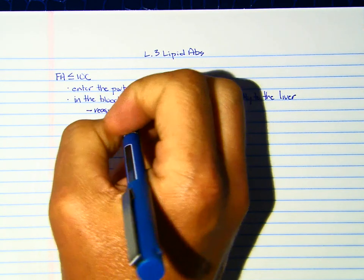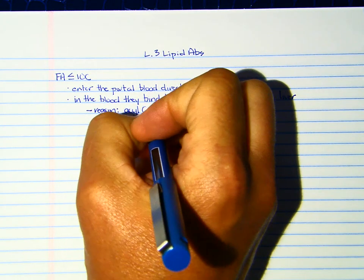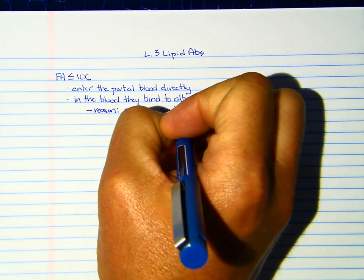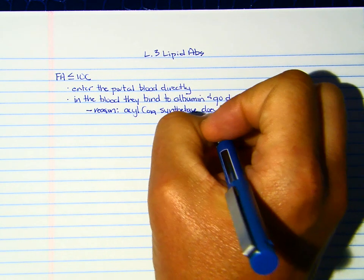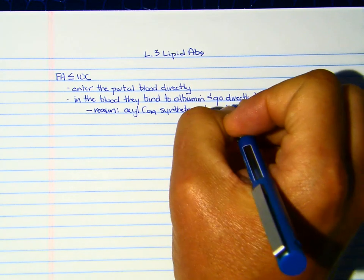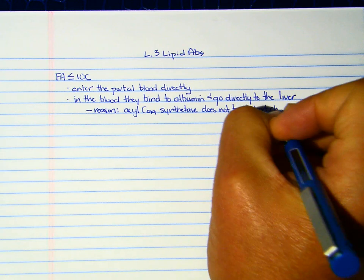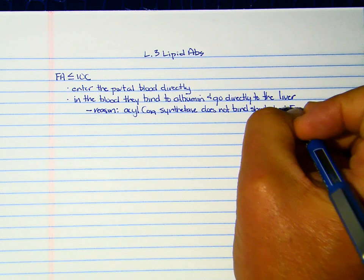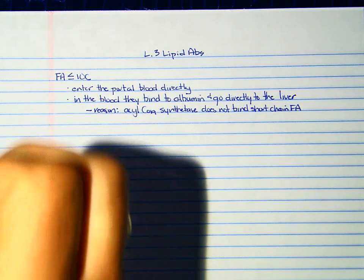ACOCOA synthetase does not bind short chain fatty acids. And we're going to learn about ACOCOA synthetase in about 2 seconds. So, fatty acids less than or equal to 10 carbons basically go directly to the liver where they're going to be metabolized.